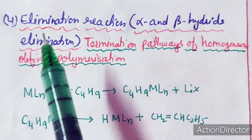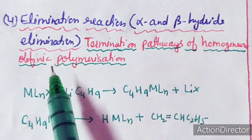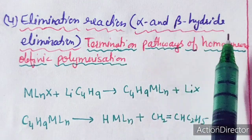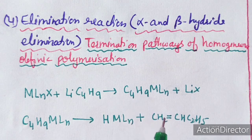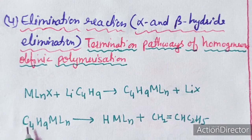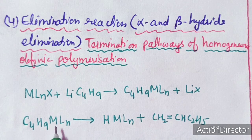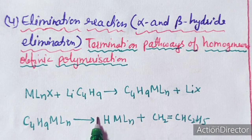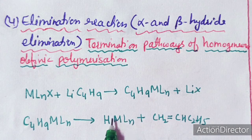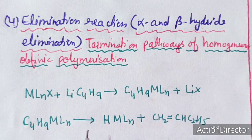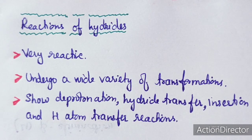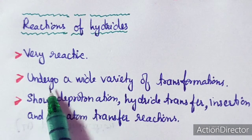The fifth preparation method is the alpha or beta hydride elimination reaction, which is generally the termination step of homogeneous olefinic polymerization. Through alpha or beta hydride elimination, a metal hydride can be formed as the termination product of the polymerization cycle.